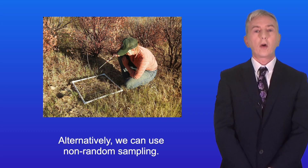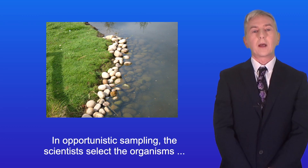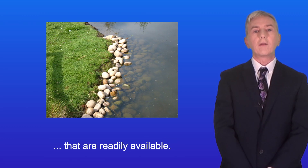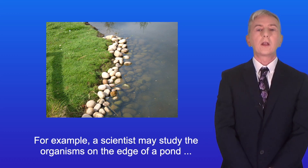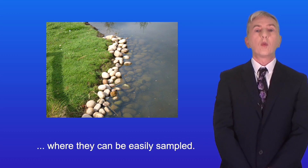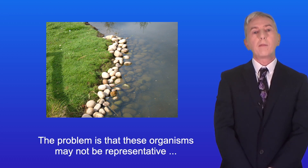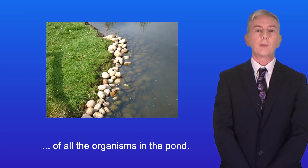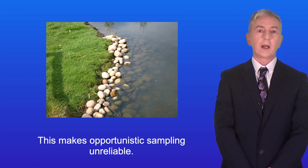Alternatively, we can use non-random sampling, and there are three types of this. In opportunistic sampling, the scientists select the organisms that are readily available. For example, a scientist may study the organisms on the edge of a pond where they can be easily sampled. The problem is that these organisms may not be representative of all the organisms in the pond, and this makes opportunistic sampling unreliable.